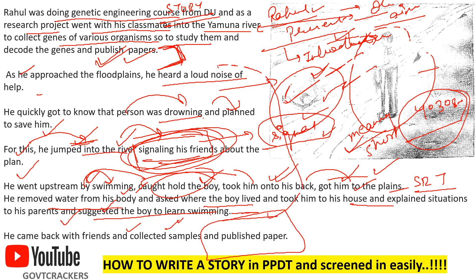'He came back with his friends, collected samples, and published the paper.' I had set a target at the start — publishing the paper — and I achieved it at the end. According to your lifestyle, background, city, and qualification — whether 10th, 12th, graduate, post-graduate, technical or non-technical entry — you have to make situations and write stories accordingly. This is a story you should try to practice.